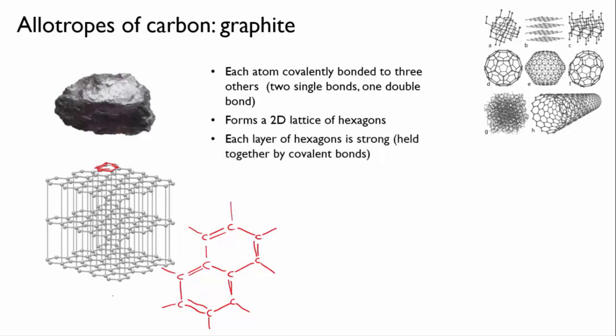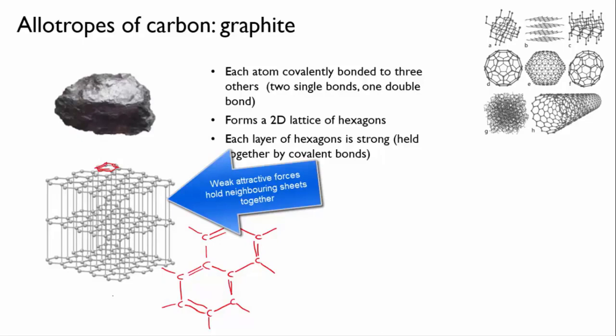These 2D sheets of carbon can stack on top of one another to form the grey solid that we're familiar with, but neighbouring sheets are stuck together only by very weak attractions called van der Waals forces. We're going to explore these more in semester 2 as well.